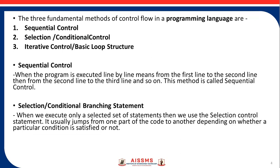There are fundamental methods of control flow in a programming language: Sequential Control, Selection or Conditional Control, and basic loop structure. Sequential Control is when the program is executed line by line — from the first line to the second line, then from the second line to the third line, and so on. This method is also called Sequential Control, that is, line by line.